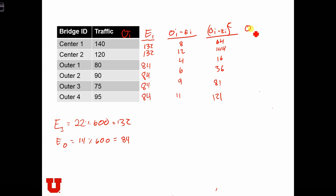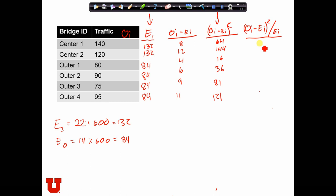And now we have to do OI minus EI all squared over EI. So we have to take this column and divide it by that column. And that is 0.48, 1.09, 0.19, 0.43, 0.96, and 1.44.